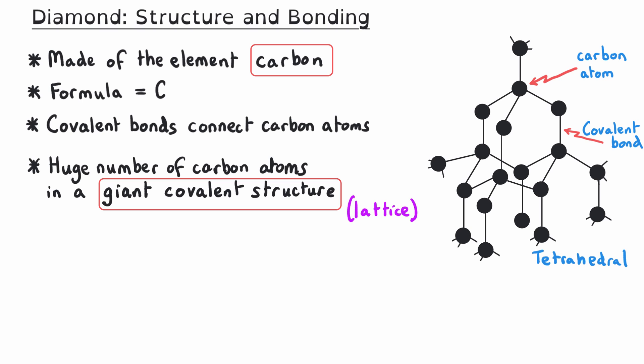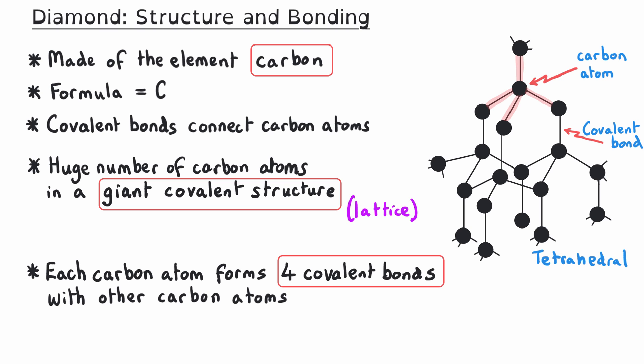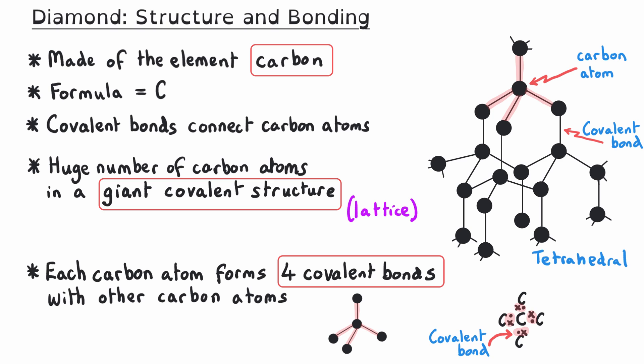As you can see from the diagram, each carbon atom forms four covalent bonds with other carbon atoms. To do this, it uses all four electrons in its outer shell, combining with one electron each from the four carbon atoms it is bonded to, giving every carbon atom eight electrons in total. The carbon atoms at the edge of the diagram appear to have fewer than four bonds simply because we have to end the diagram somewhere — those atoms do have four bonds.